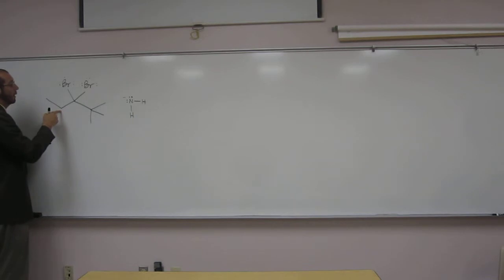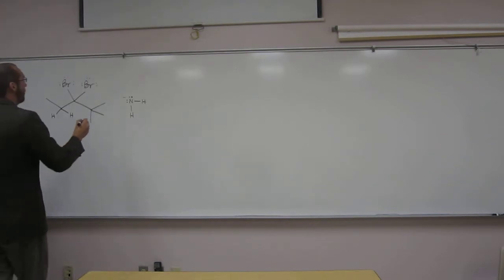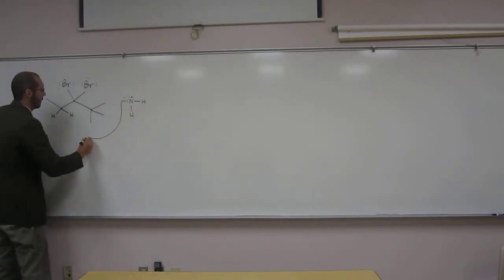So if we look here, we've got two alpha carbons, but only one of them has protons on them. So these protons here, if you want to explicitly draw them, are going to be acidic. So we have a strong base here and an acid here. What do you think is going to happen? Deprotonate, yeah, it's going to deprotonate it. An acid-base reaction, everybody's favorite fast reaction.